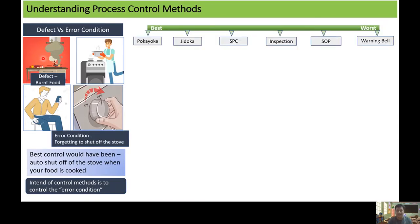If you create a scale starting with the best side on the left and then moving towards the worst side on the right, then you can scale the different control methods. These are the most popular control methods. In a ranking where Poka-yoke, Jidoka, SPC is towards the best side...